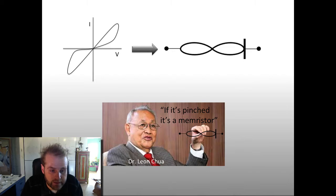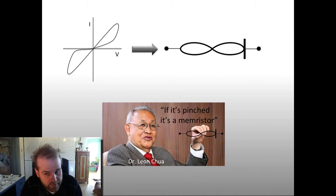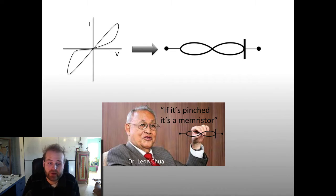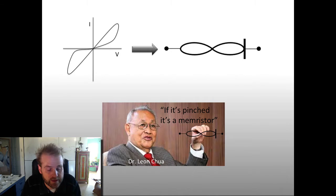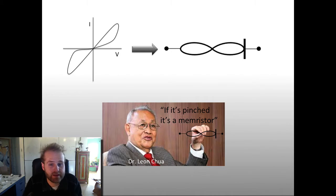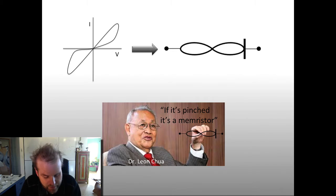It is very easy to draw — way faster than the existing Memristor symbol. And Dr. Leon Chua, the theoretical inventor of the Memristor, has said rather famously: if it's pinched, it's a Memristor. So it's symbolically representative, and it's easy to draw — two very good things for a symbol.